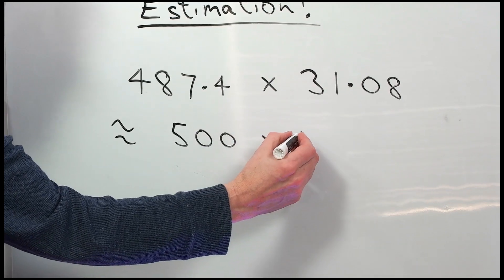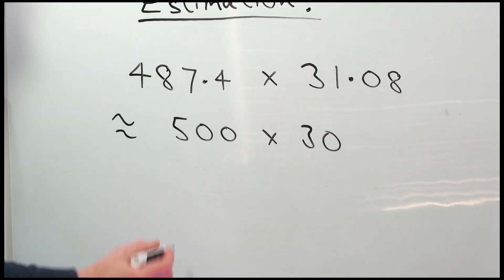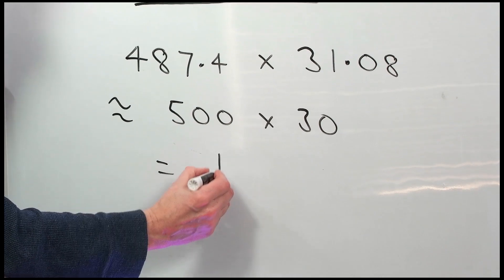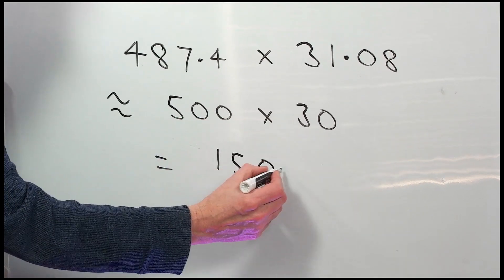500 times 30. Keep it simple. So three fives are 15. That's 15,000.